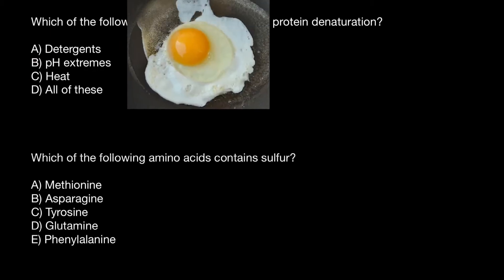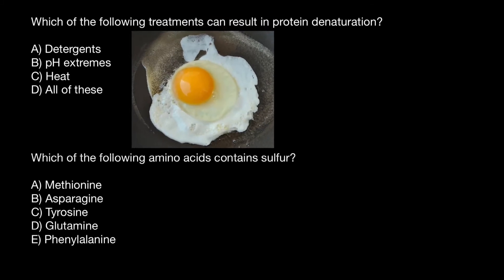Take a look at this picture. This is variant C — heat. The whites of the egg represent pure protein. And you can see what heat does to this protein — it would be irreversibly changed.